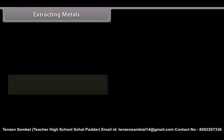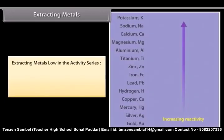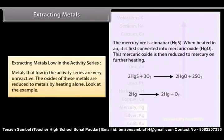Extracting metals. After the metals are separate from their ores, they are classified based on their reactivity. The following are the various categories of metals grouped as per their reactivity. Extracting metals low in the activity series. Metals that are low in the activity series are very unreactive. The oxides of these metals are reduced to metals by heating alone.